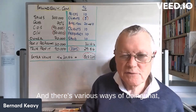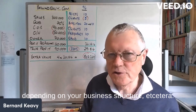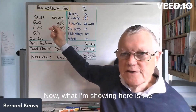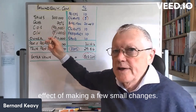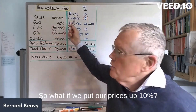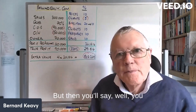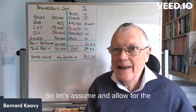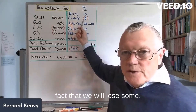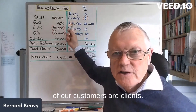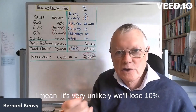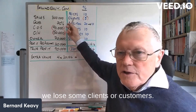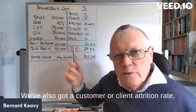The profit per the accounts would be £160,000, but the true profit is £90,000 because the owner has taken £70,000 of that for themselves. Now, what I'm showing here is the effect of making a few small changes. What if we put our prices up 10%? You'll say, well, you might lose some customers, so let's assume and allow for the fact that we will lose some — say, 5% of our customers or clients.